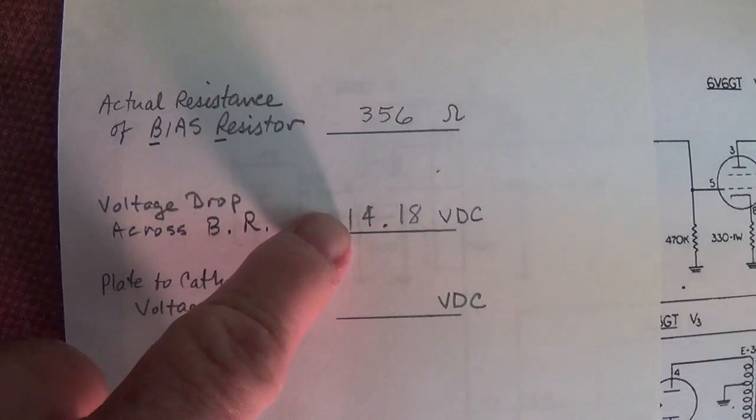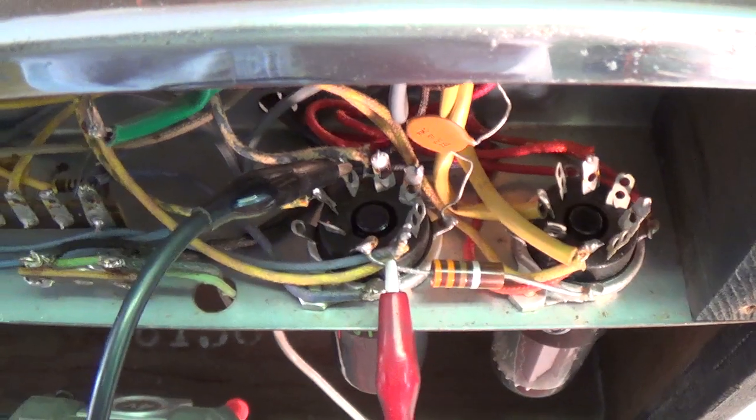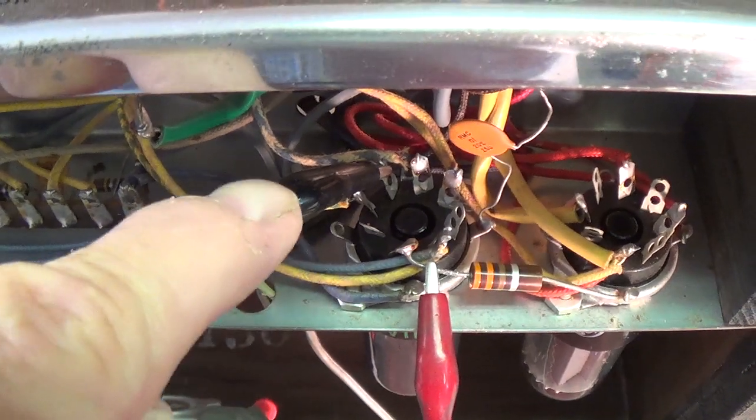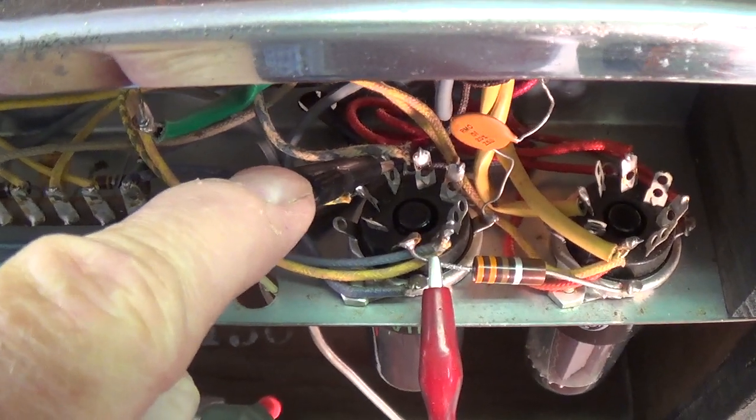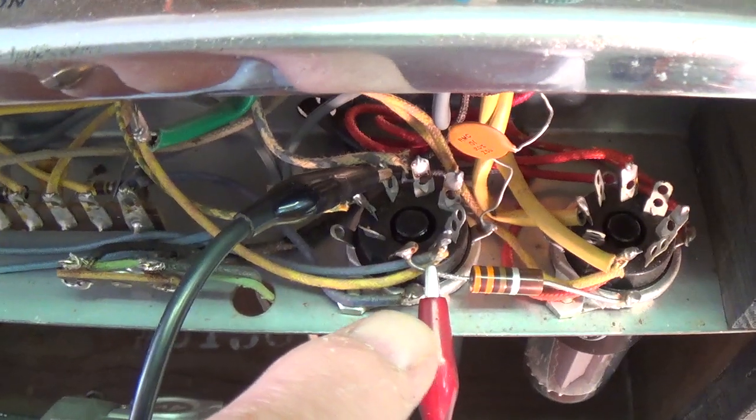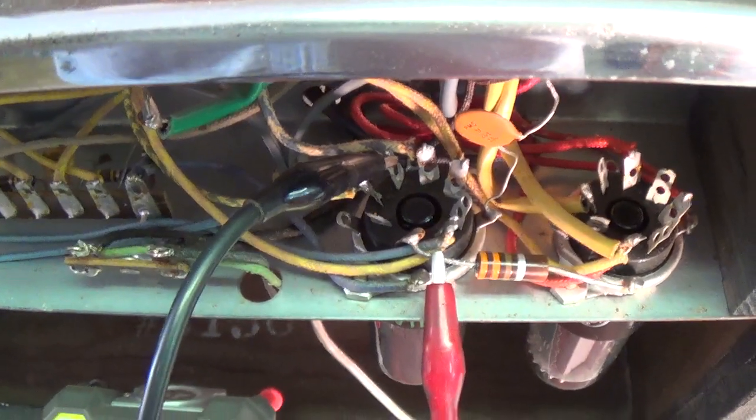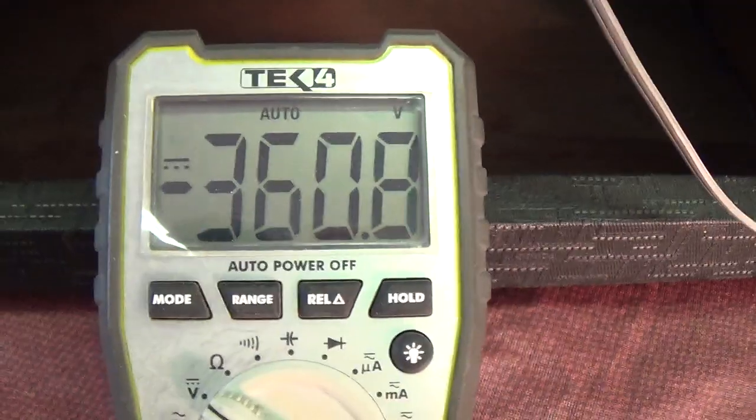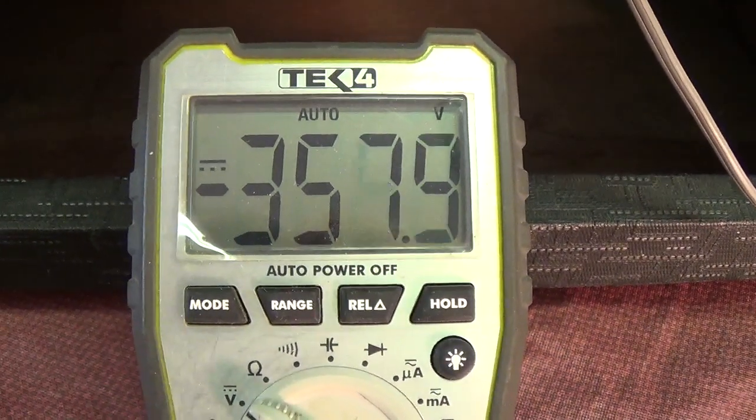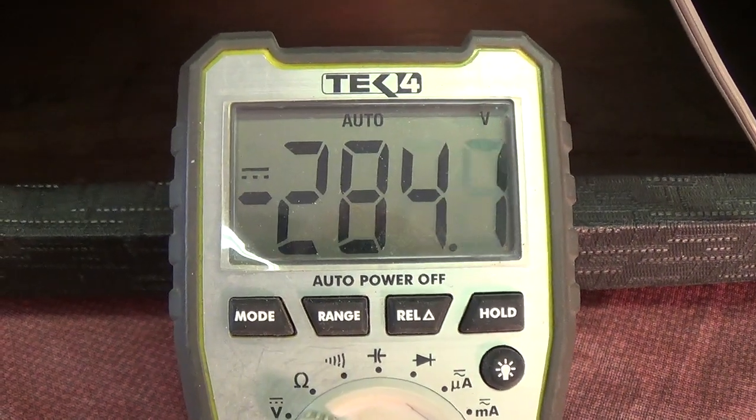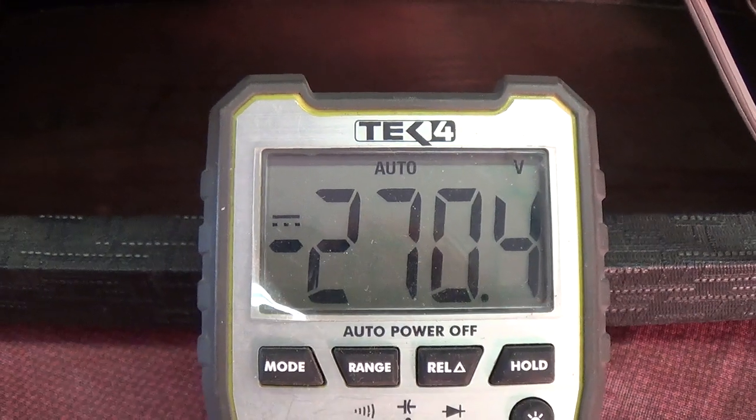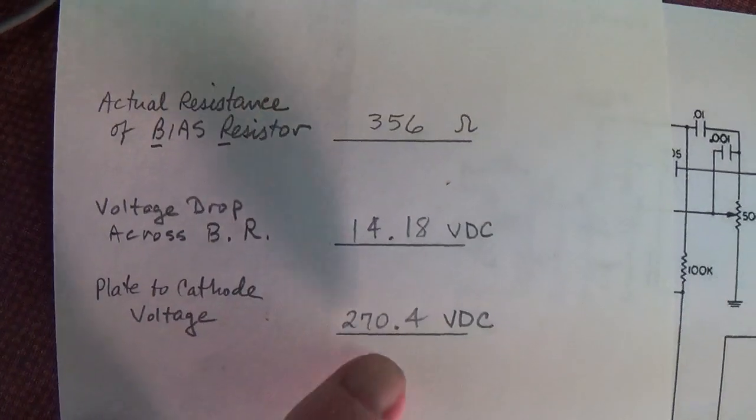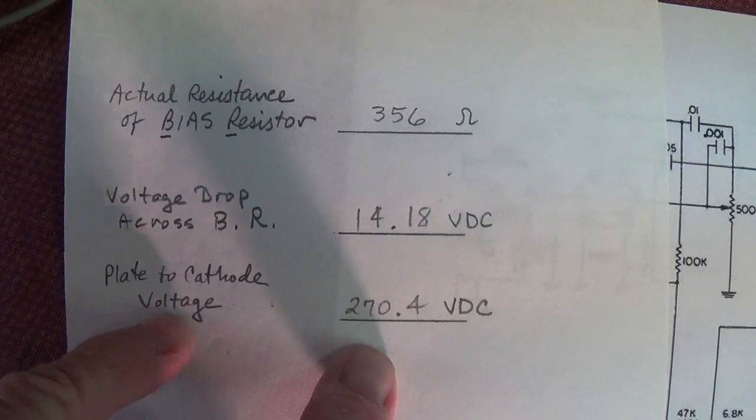As we will see, the value will jump around a little as the circuit warms up, but then it's going to home in on a stable value. And that value looks to be around 14.1. So I write that down on my sheet. Next, I turn off the amp, drain the filter capacitors, and then move the leads over between pin 3, which is the plate, and pin 8, which is the cathode. And I'm going to measure the plate voltage within this 6V6. Again, it's going to jump around a bit, but hopefully it will stabilize. And it looks like it's going to be about 270.4, which I write down here under plate to cathode voltage.